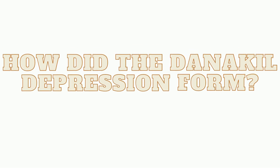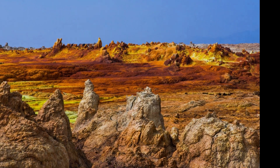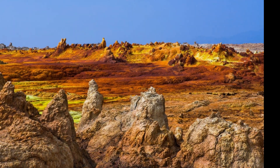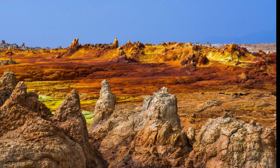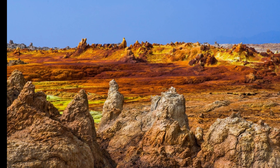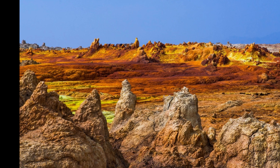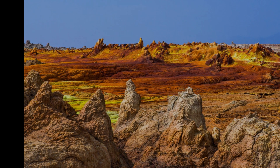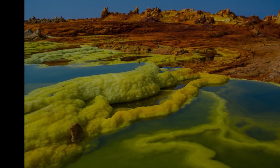How did the Danakil Depression form? The Danakil Depression formed from the continental drift of the African and Asian tectonic plates. As the plates drifted apart at a rate of 1 to 2 centimeters per year, they left behind a geological depression known as the Danakil Depression, or Afar Depression.